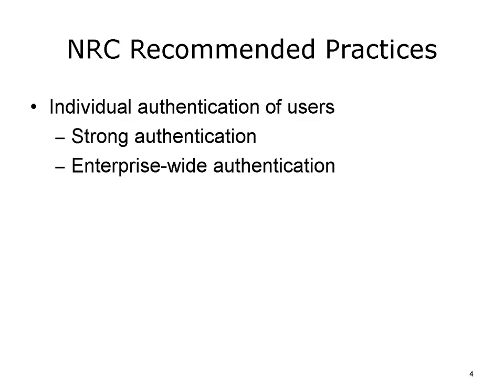Another type of strong authentication often involves two stages, referred to as something you have and something you know. Something you have might be a smart card with a computer chip, or a token with a randomly changing ID number. Something you know might be an individual password. Someone who found the token could not use it without the password, and vice versa. In addition, to minimize risks, organizations should be moving to enterprise-wide authentication, where an individual might sign on only one time per session and get access to all that they have a right to see.